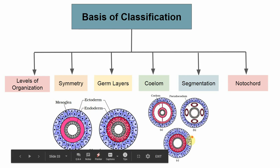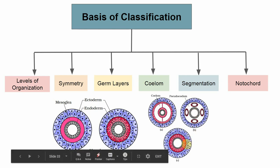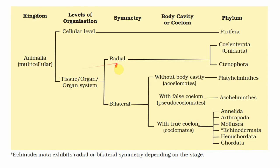The next basis is segmentation, also called metamerism, where the body is divisible into a series of segments both externally and internally. The last basis is the notochord — an exclusive character of chordates. The notochord is a rod-like rigid structure which provides mechanical support to the body.